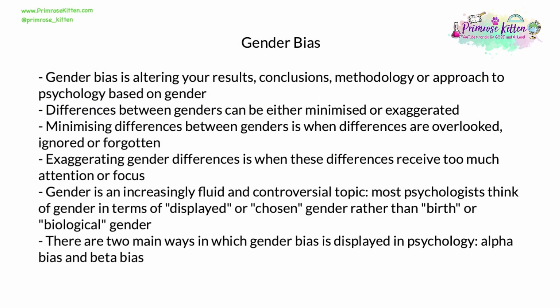Gender bias can be defined as altering your results, your conclusions, your methodology, or even your whole approach to psychology based on gender. Differences between genders can be either minimised or exaggerated. Minimising differences between the two genders is when differences are overlooked, ignored, or forgotten. On the other hand, exaggerating gender differences is when these differences receive too much attention or focus — they are exaggerated.